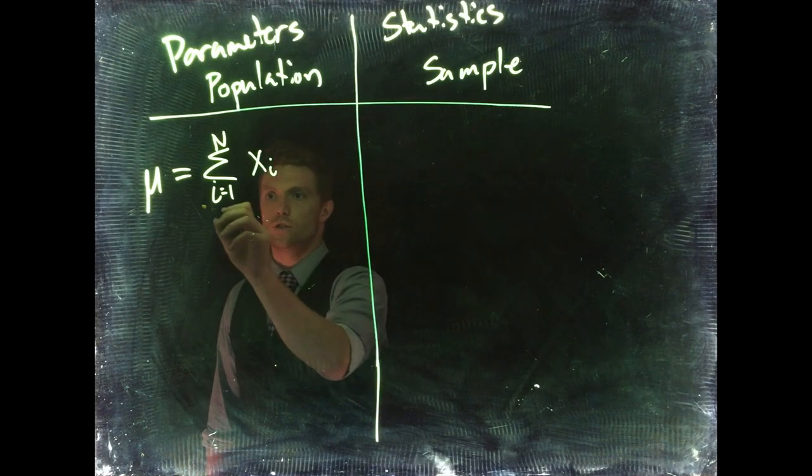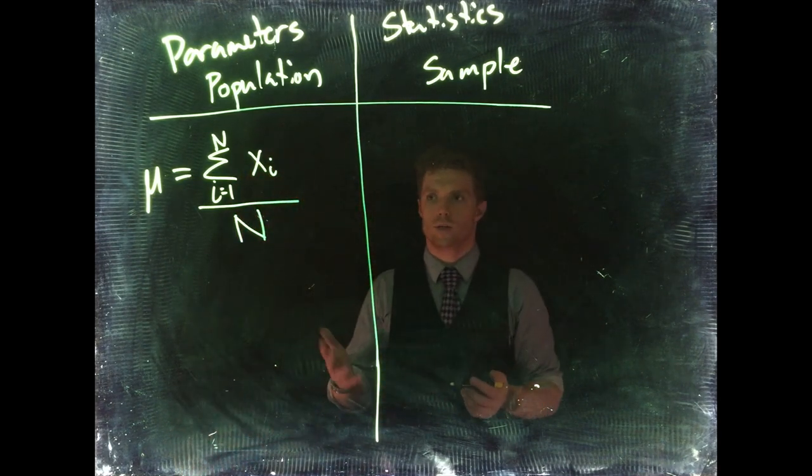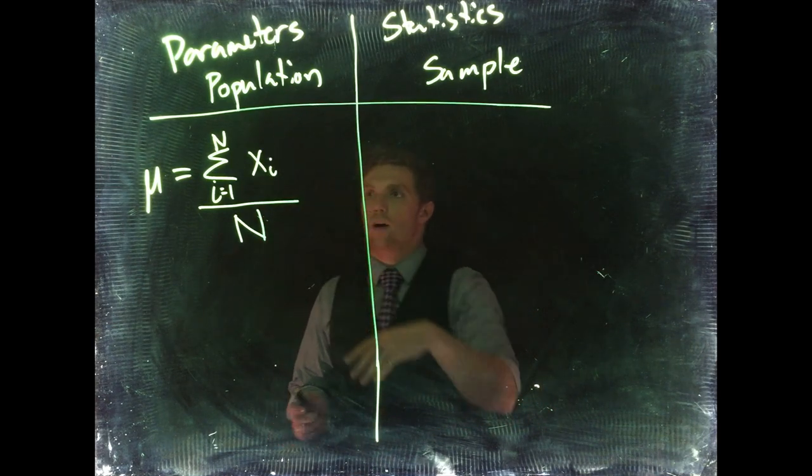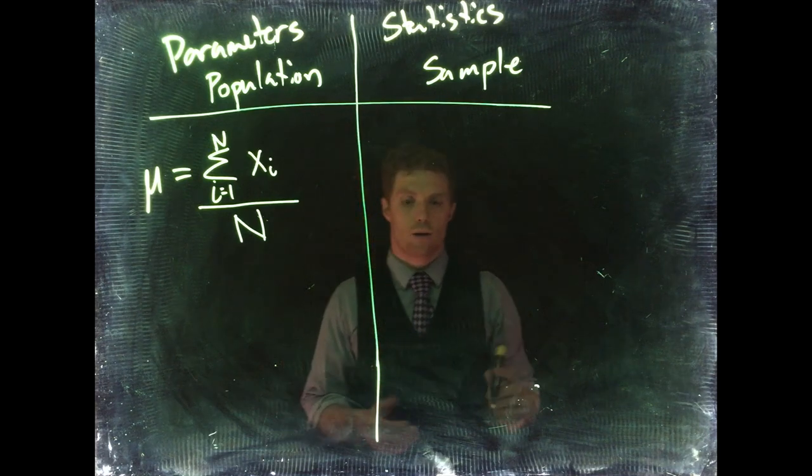your individual tree measurement, tree height, divided by total sample size. So that should be pretty normal. Now most of the time we don't know what all the population values are. We don't have enough time to go measure every single tree, so we go out and take a sample.